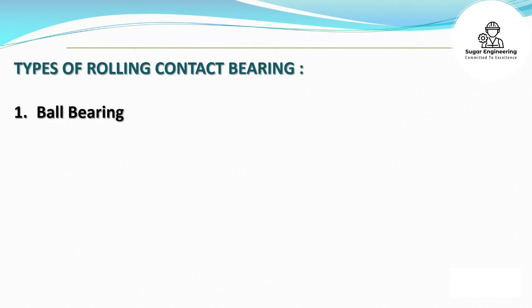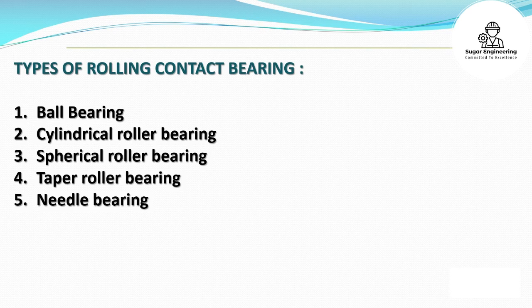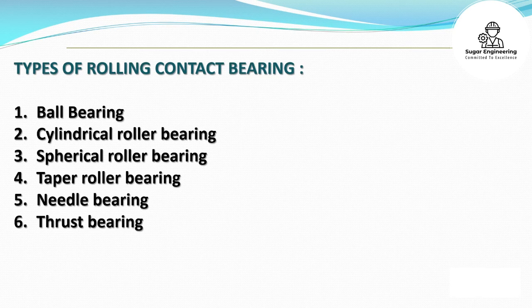Types of rolling contact bearings include: ball bearing, cylindrical roller bearing, spherical roller bearing, taper roller bearing, needle bearing, and thrust bearing.